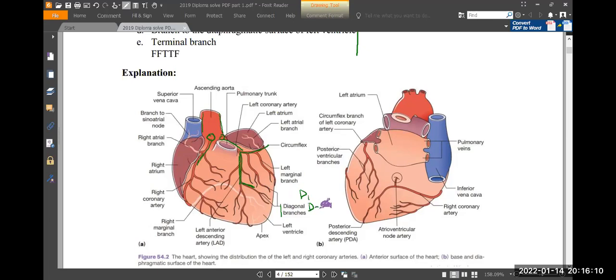One detail about the key: first diagonal, second diagonal, etc. For circumflex, the connection with the branch is a marginal branch, but OM branch—obtuse marginal branch. OM branch, left coronary artery main branch should take a number of people to see.